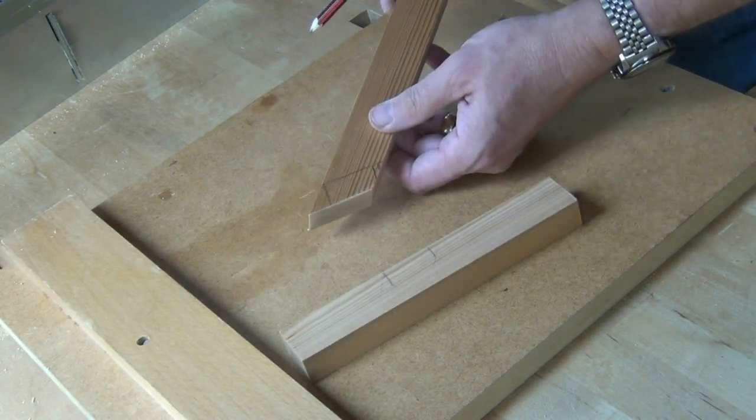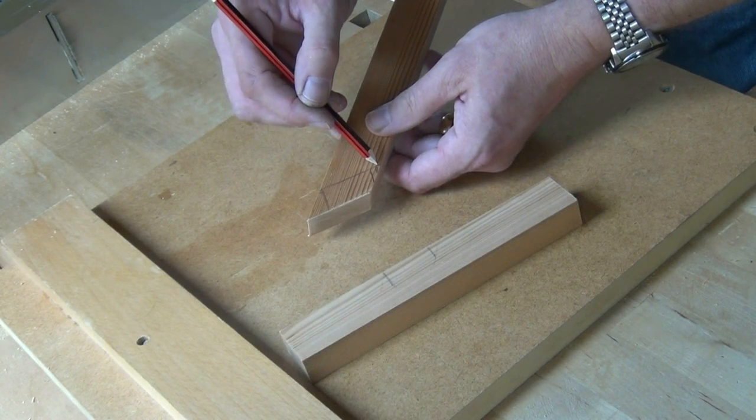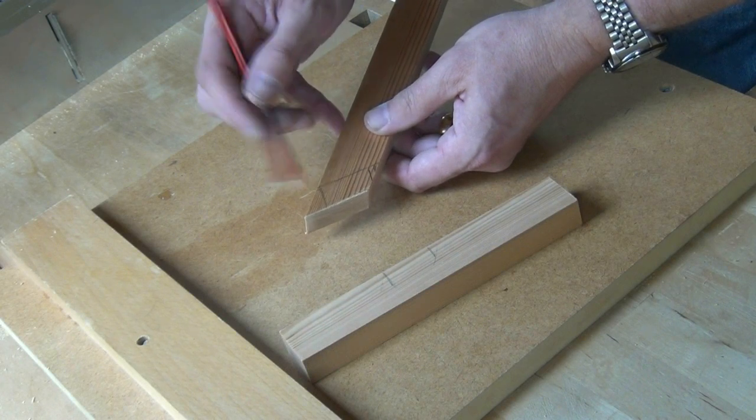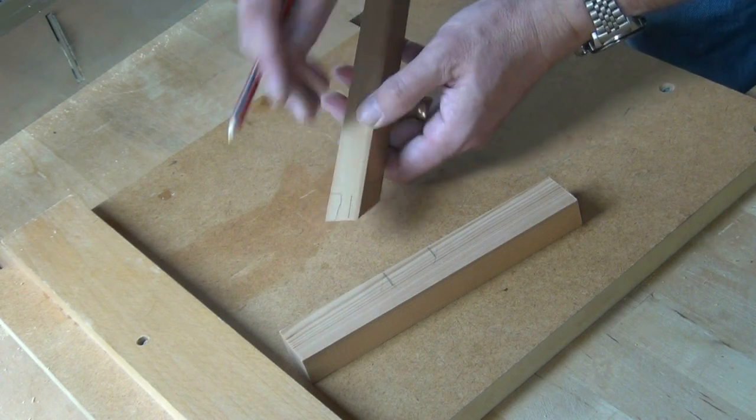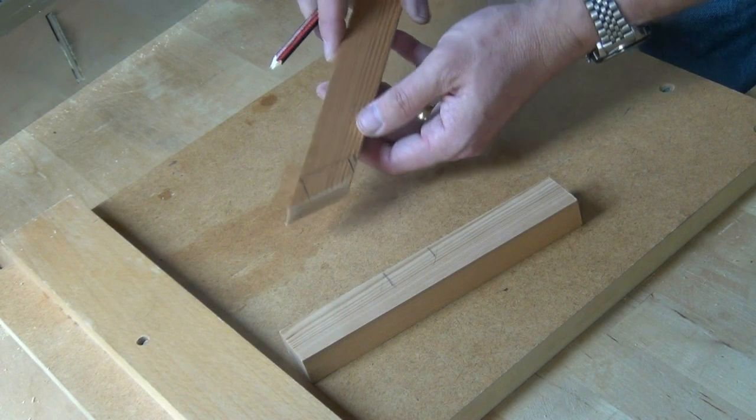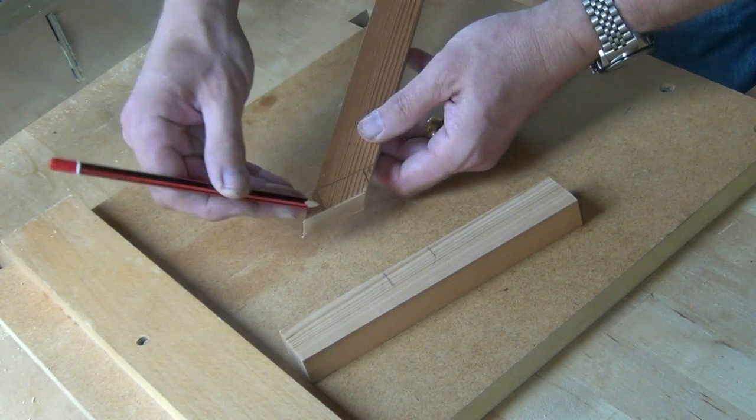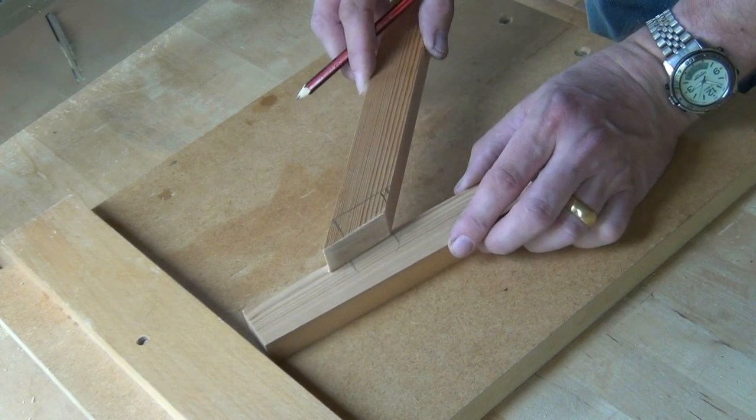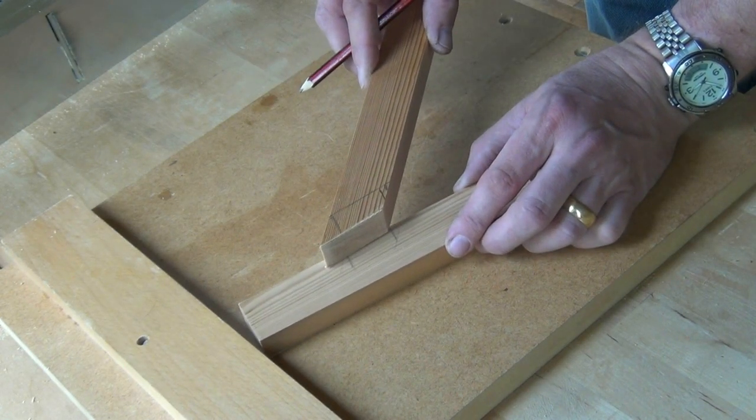Then I'll cut the tenon and to begin with I shall cut off at the same angle that the joint is going to be to a depth of one third on each side and then I'll square up the tenon on the ends to the same length as our mortise.